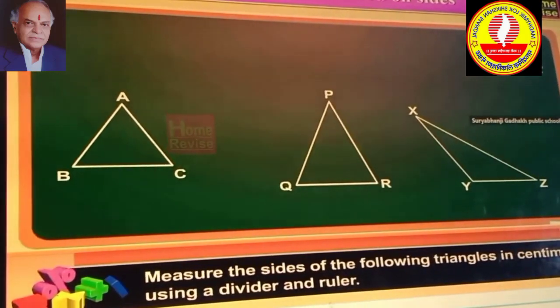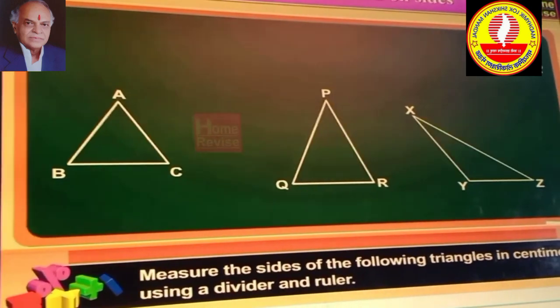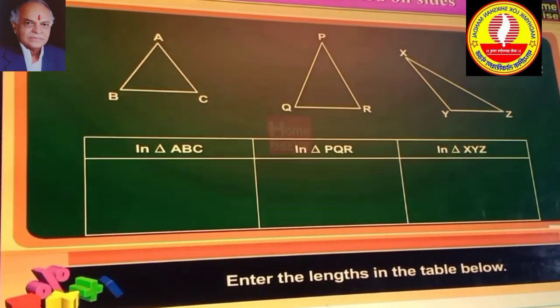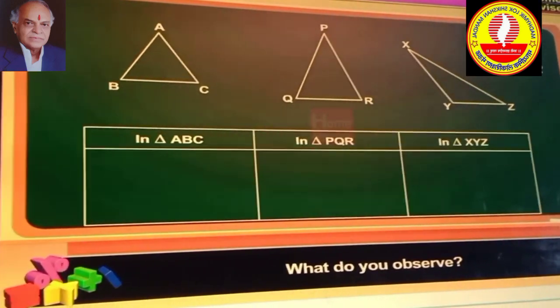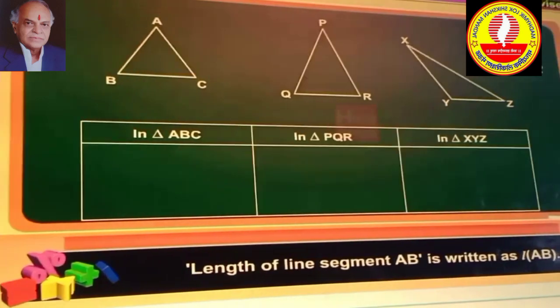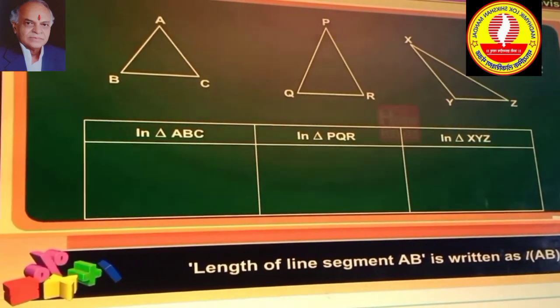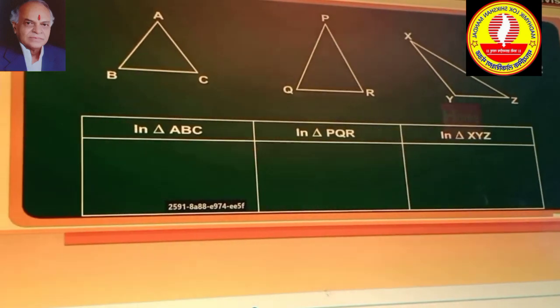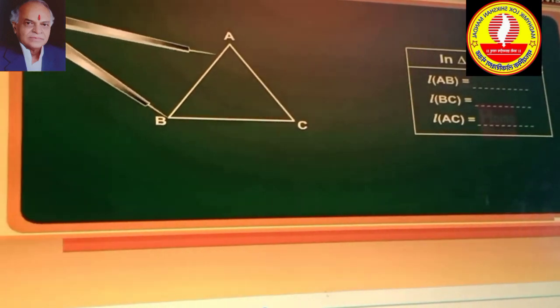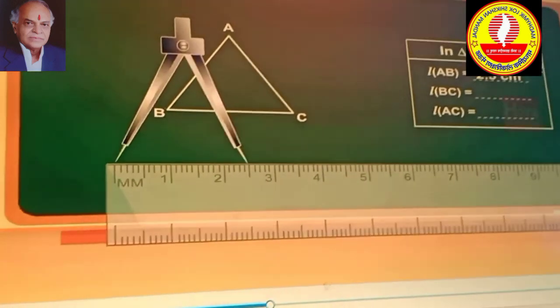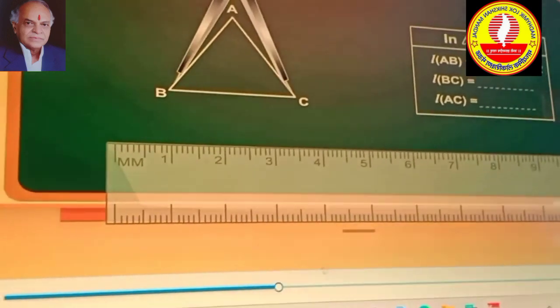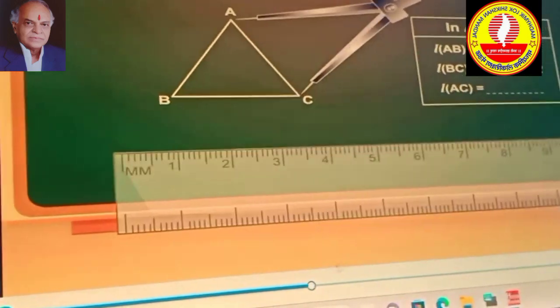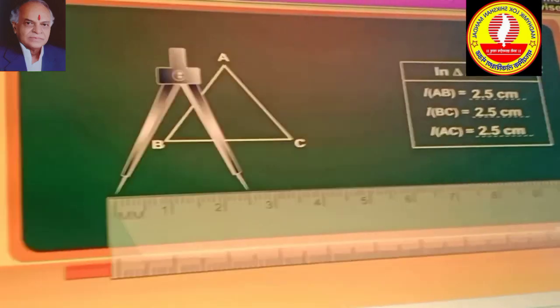Measure the sides of the following triangles in centimeters using a divider and ruler. Enter the length in the table below. What do you observe? Length of line segment AB is written as length of AB. In triangle ABC, length AB is equal to 2.5 cm, length BC is equal to 2.5 cm, length AC is equal to 2.5 cm.